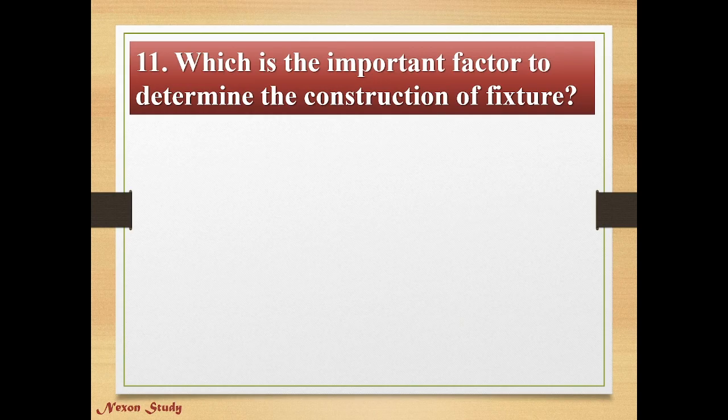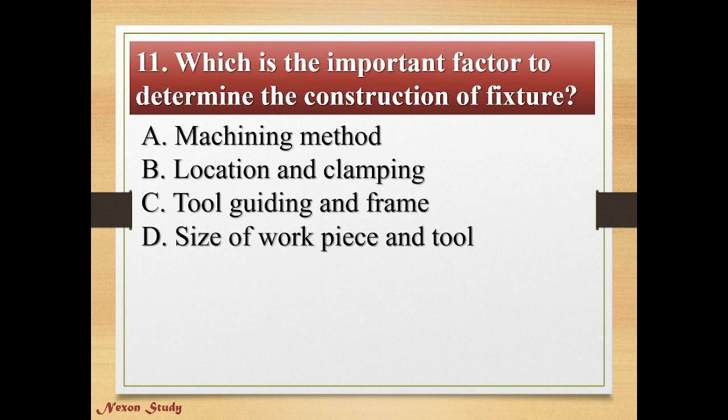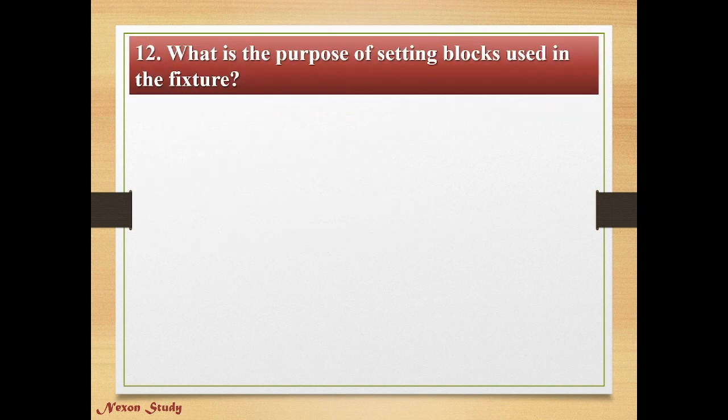Question: Which is the important factor to determine the construction of a fixture? Options: machining method, location and clamping, tool guiding, size of workpiece and tool. Right answer is machining method.